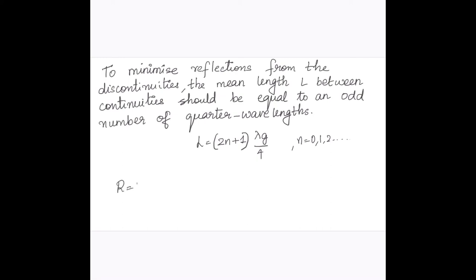R is equal to 1.5B for an E bend. So if you design it in such a way that the radius of curvature is equal to 1.5B, B is the dimension of it. So that can result in small reflection.